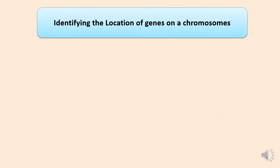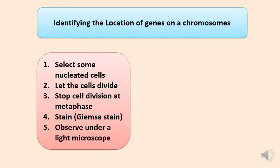To identify the location of genes on a chromosome, we first have to observe the chromosomes. We cannot observe them in an interphase cell. We have to get some nucleated cells such as white blood cells and let the cells divide. Then we have to stop the cell division at metaphase and stain with a dye such as Giemsa stain. Afterwards we can observe them under the light microscope.